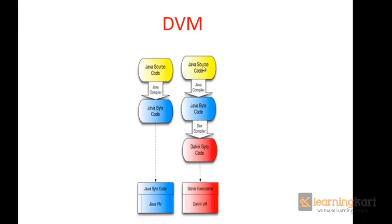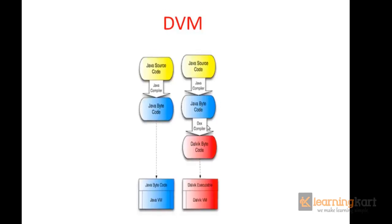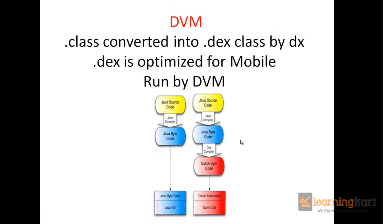Now in case of Android, the Java source code gets compiled into Java bytecode. That Java bytecode, or the .class file, is then operated on by the DEX compiler and converted to a .dex format. The DEX format is an executable format optimized for the mobile platform, and the DEX tool then combines all the .class files into a single classes.dex file, which contains all the Java code for the application.